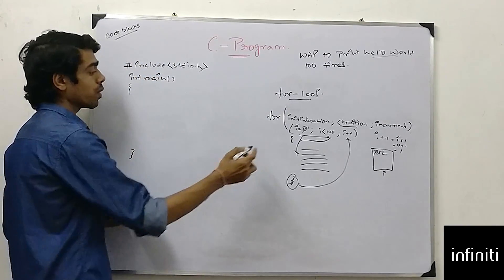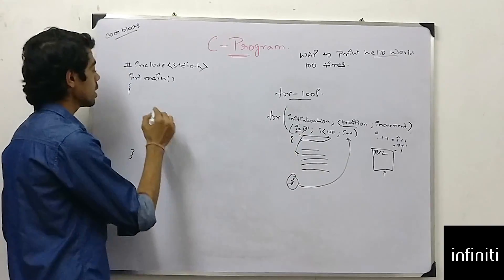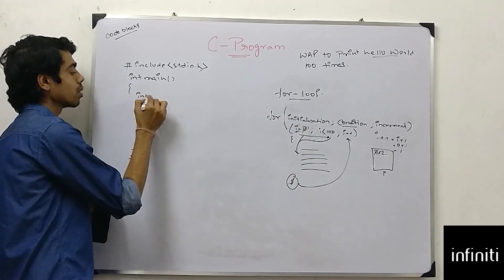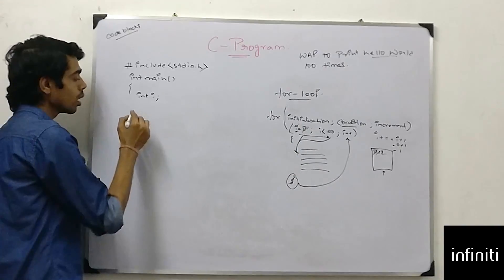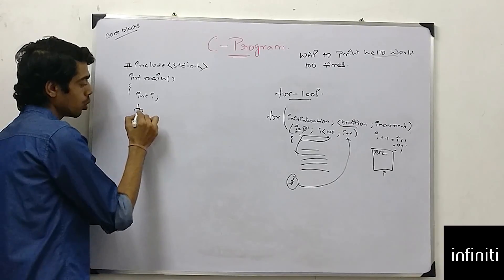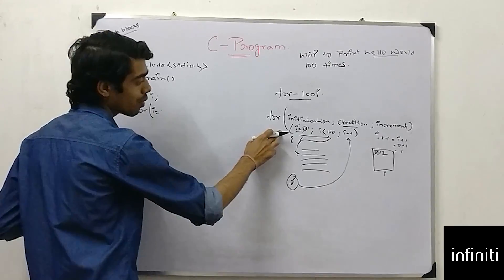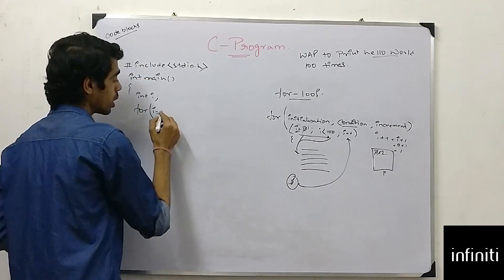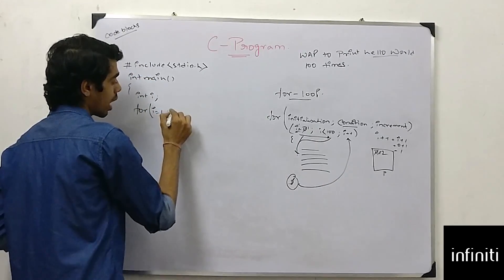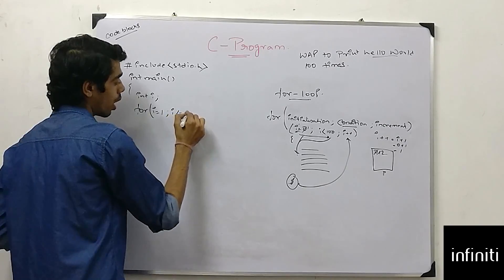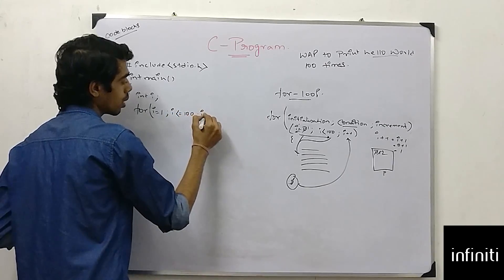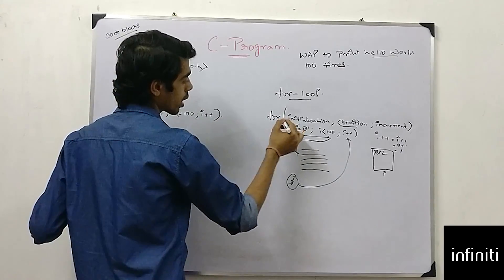So, at first I have to take i. Means I have defined i over here. Now, I will write my for loop: for i is equal to zero. Over there, I have taken zero. Over here, I will take one. i less than equals to 100. i plus plus. These both are correct.